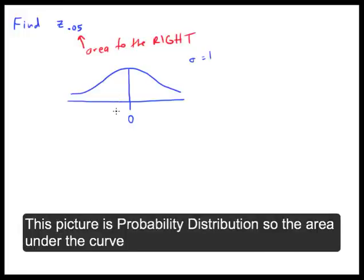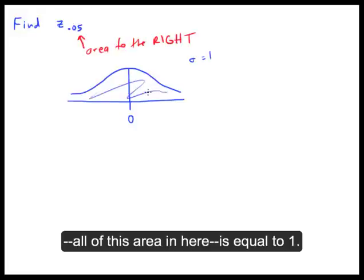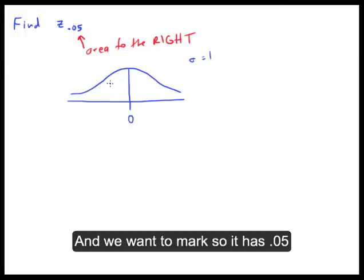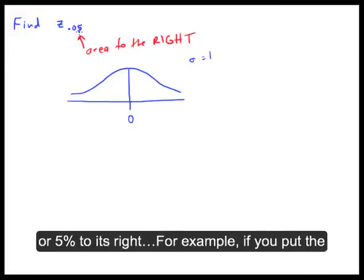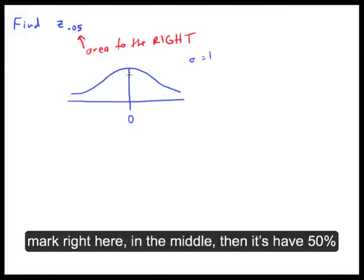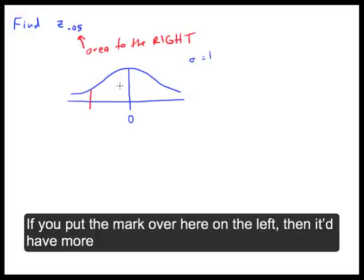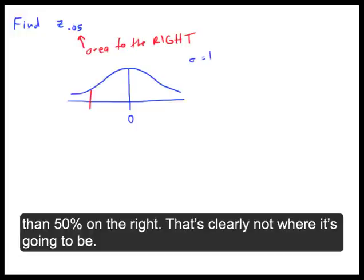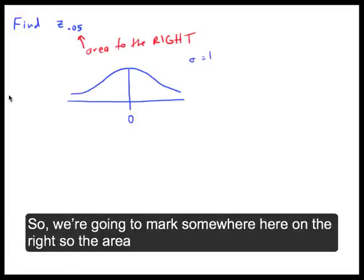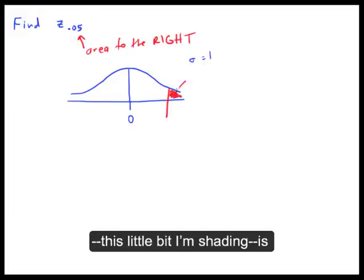On this particular picture, it's a probability distribution, so the area under the curve — all of this area in here — is equal to one. And we want to mark so that it has 0.05 or 5% to its right. So for example, if you put the mark right here in the middle, then it would have 50% to the right. If you put the mark over here on the left, then it would have more than 50% on the right, so that's clearly not where it's going to be.